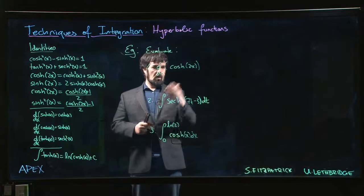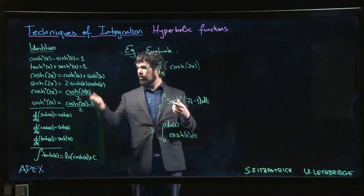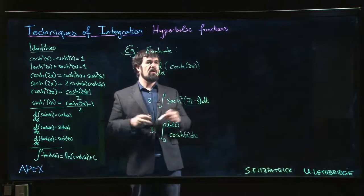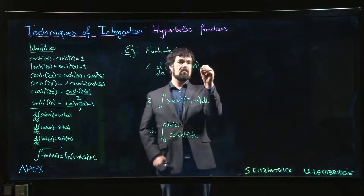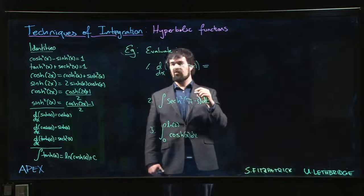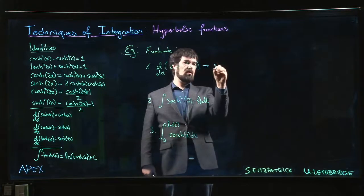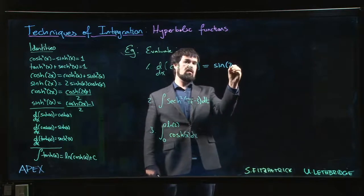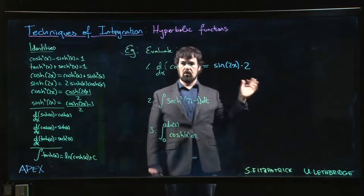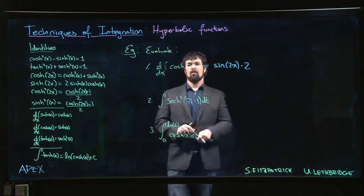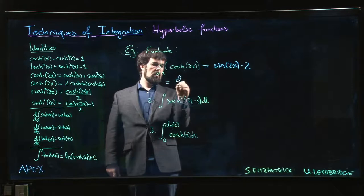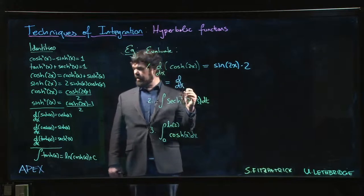So derivative of cosh(2x)—hyperbolic cosine at 2x. Two ways we can actually do this. We don't need to be fancy; we can simply rely on chain rule. Derivative of the outside first: derivative of cosh is sinh, so this is sinh(2x), and then we multiply by the derivative of the inside, which is 2. Done.